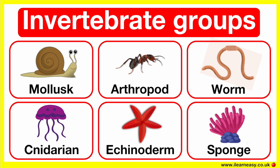For example, invertebrates with six legs, invertebrates with more than six legs, and invertebrates without legs. Invertebrates without legs can be grouped into worm-like or not worm-like. The six groups are mollusks,